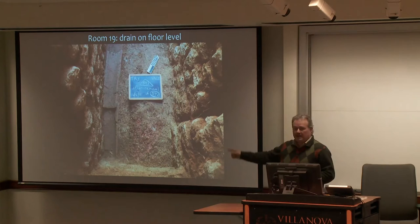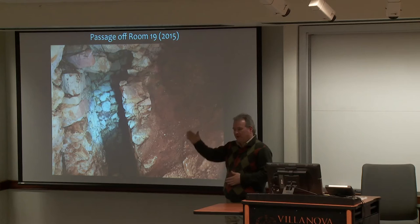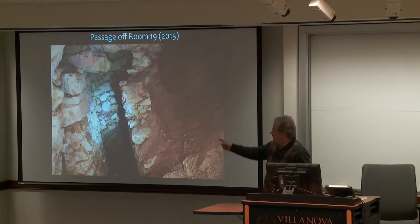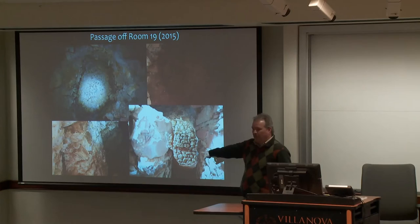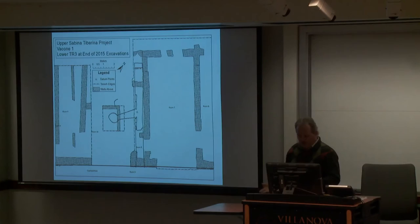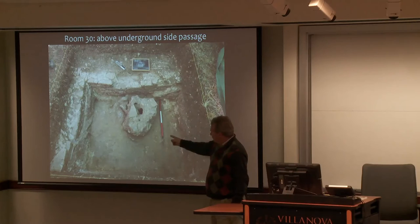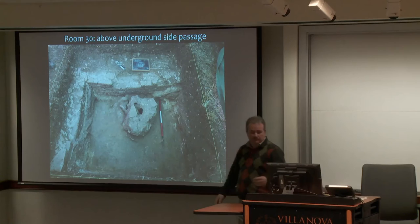We eventually dug down and found a floor level with a nice little drain and a red clay floor. We started wondering about that side passage — you might want a passage from the upper level down to the lower level, but why the weird side passage? When you go in that little space and look up, you see what looks like a finished cap to the top of the ceiling. So we decided to put down a trench right over the hole from the top to figure out what that little passage and hole is supposed to be.